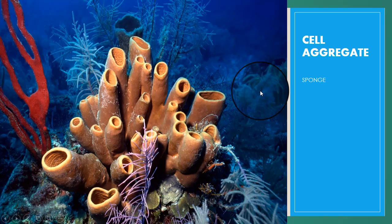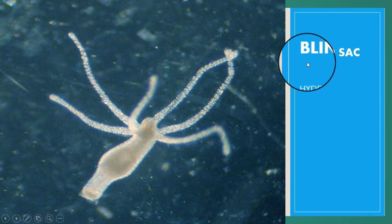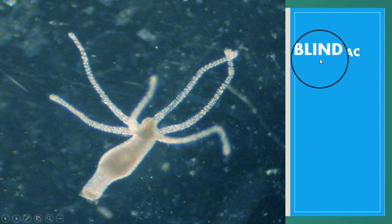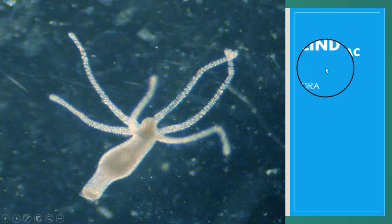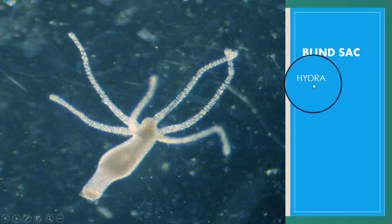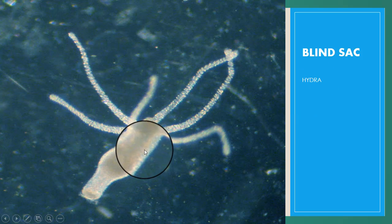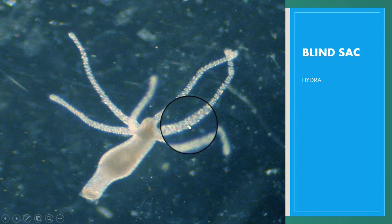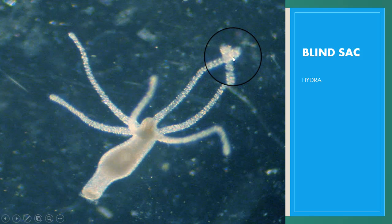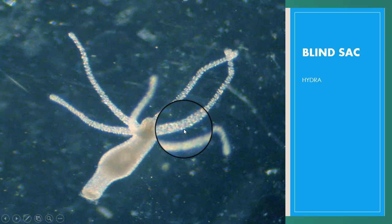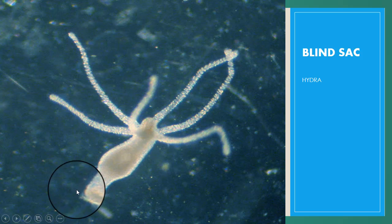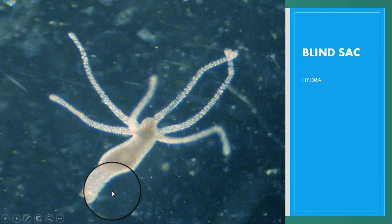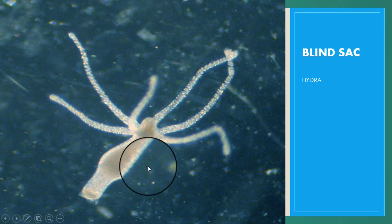The second type is the blind sac body plan, exhibited by some eumetazoans like cnidarians and flatworms. The body of hydra, a cnidarian, resembles a sac with a single gastrovascular cavity that opens outside by a mouth. This aperture is used for both ingestion of food and egestion of fecal matter.